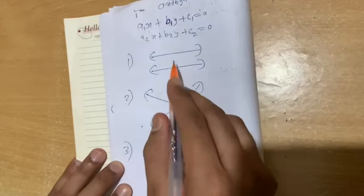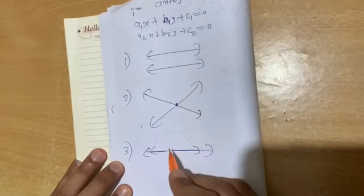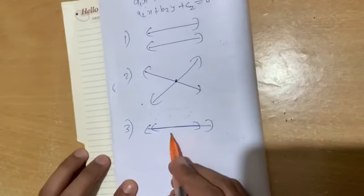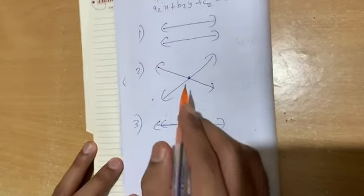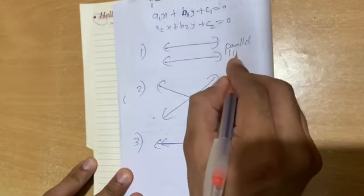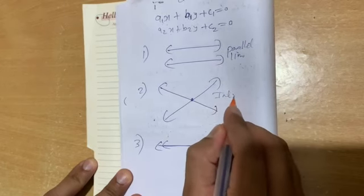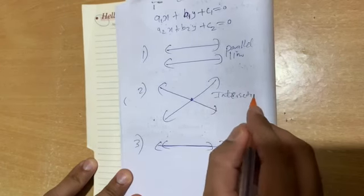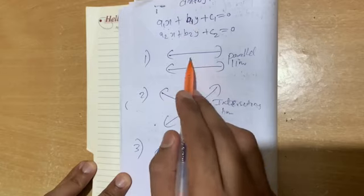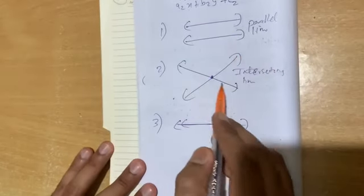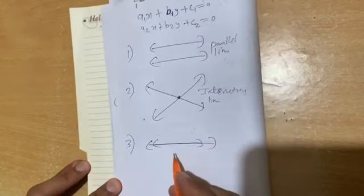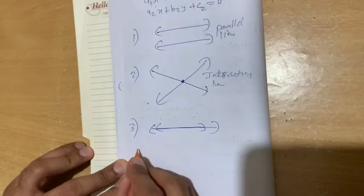So the three possibilities graphically are: parallel lines, intersecting lines, and coincident lines. For parallel lines there is no common answer — no solution. For intersecting lines there is only one answer — a unique solution. For coincident lines there are infinite answers — infinitely many solutions.